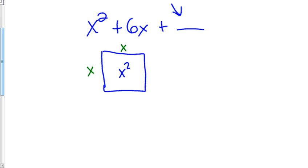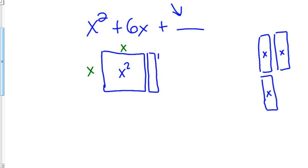But you also have these long versions, and those are x's. If you have six of those, and we want to make this figure into a square, we need to split those six up and put them on each side.